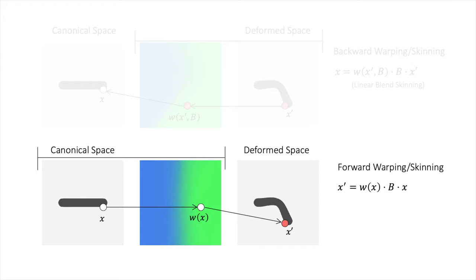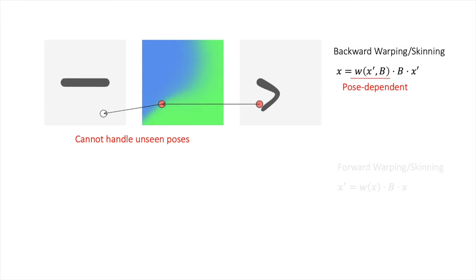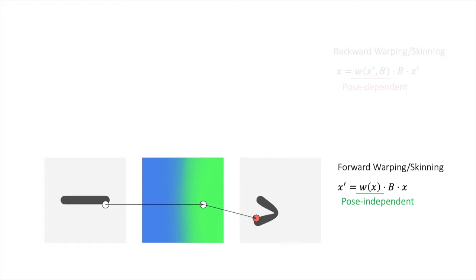As illustrated here, backward skinning weights are pose dependent and do not generalize well to novel poses. In contrast, forward skinning weights do not depend on object pose and thus generalize more easily to unseen poses.